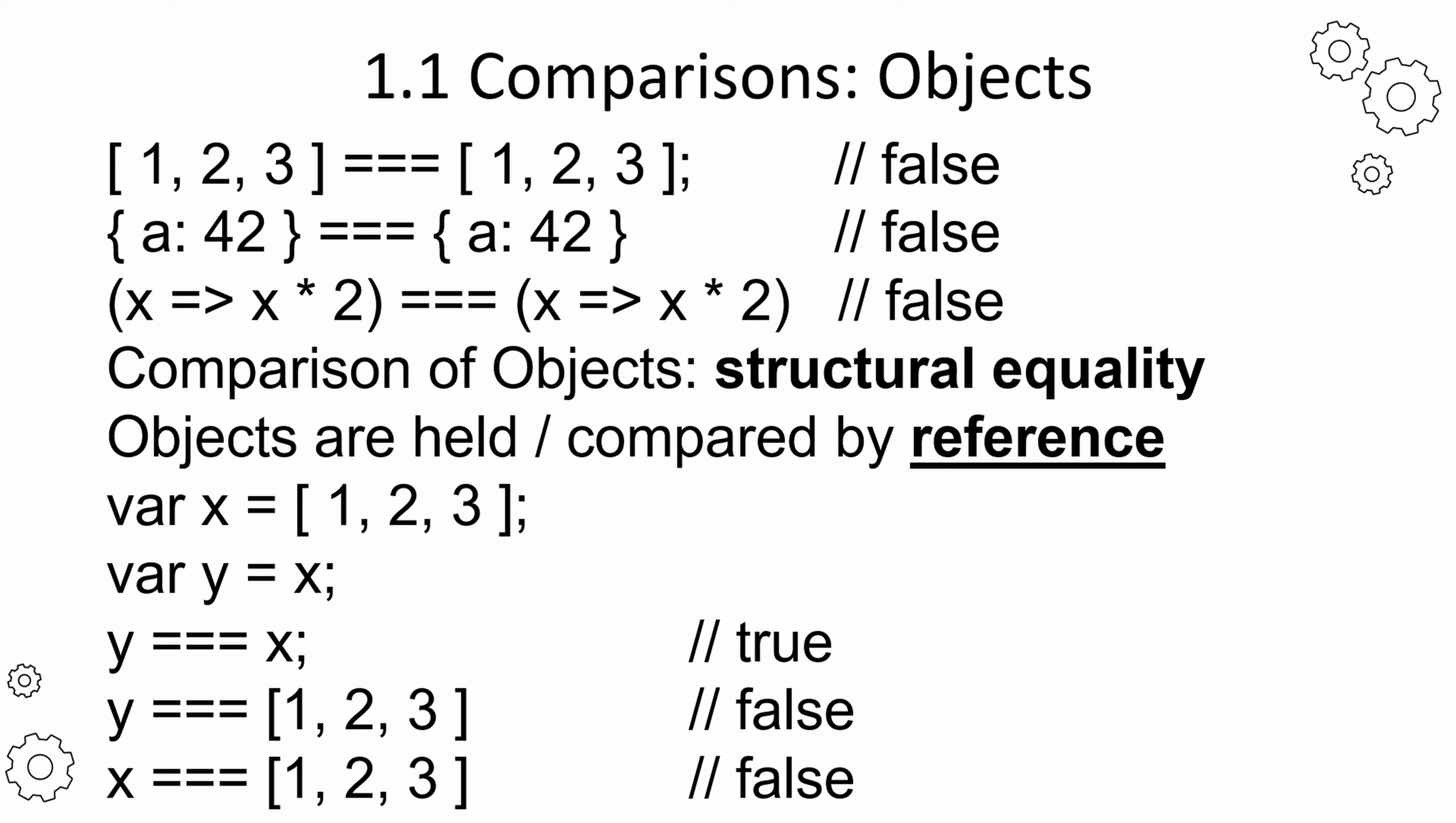Every object has a reference. It's like an address of an object. When we are comparing objects, we are checking if they have the same reference, when we have two variables pointing at the same object.